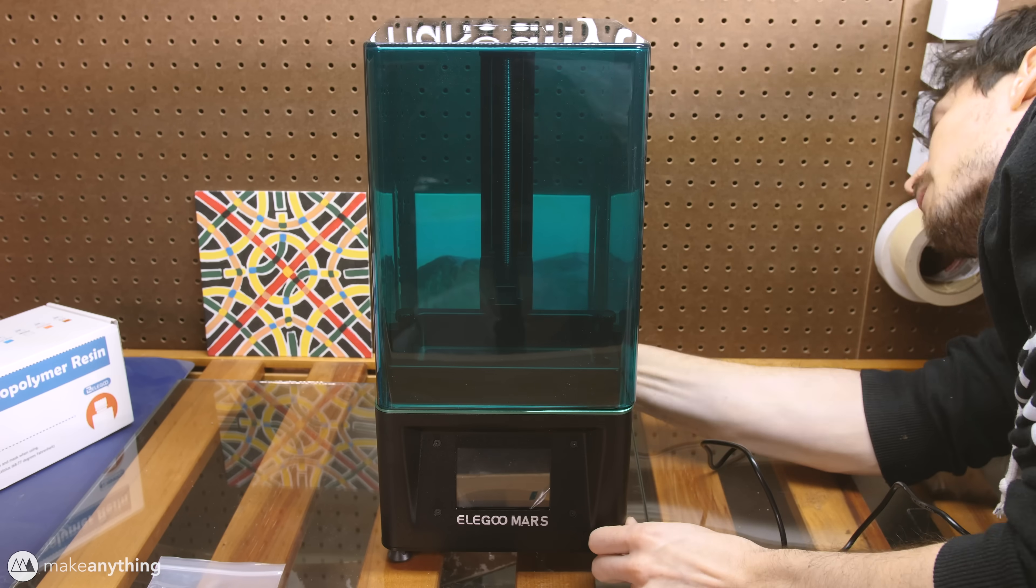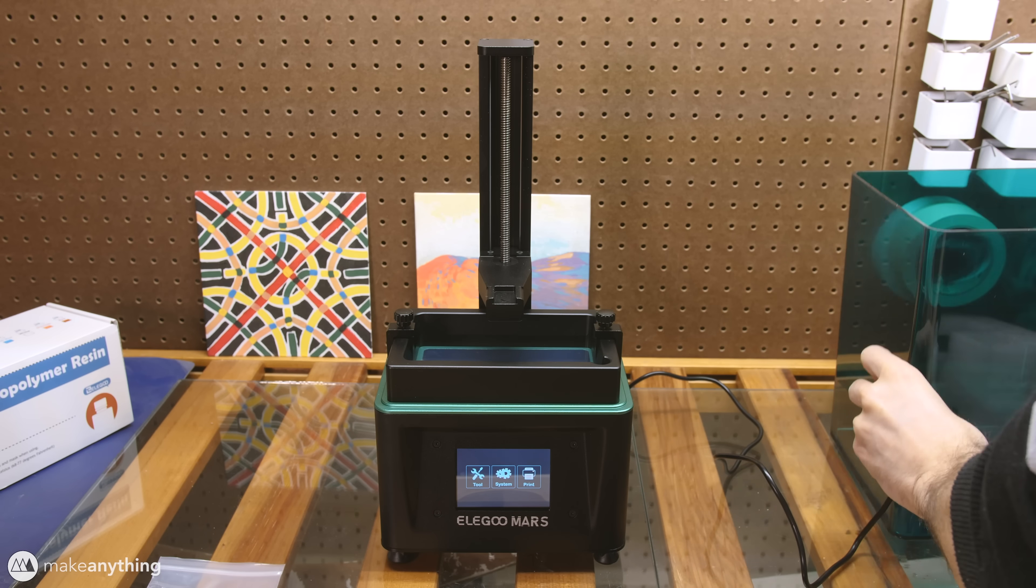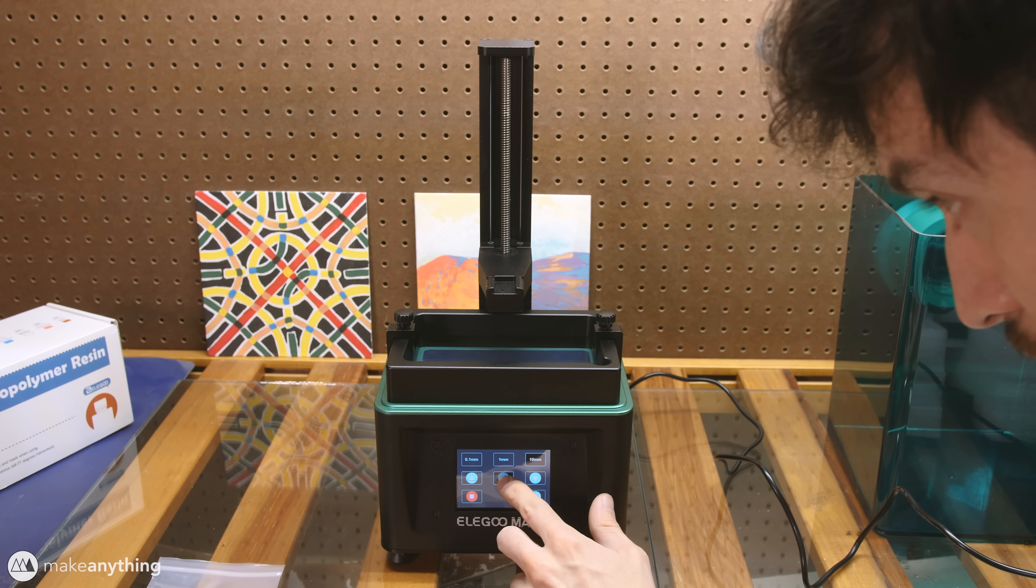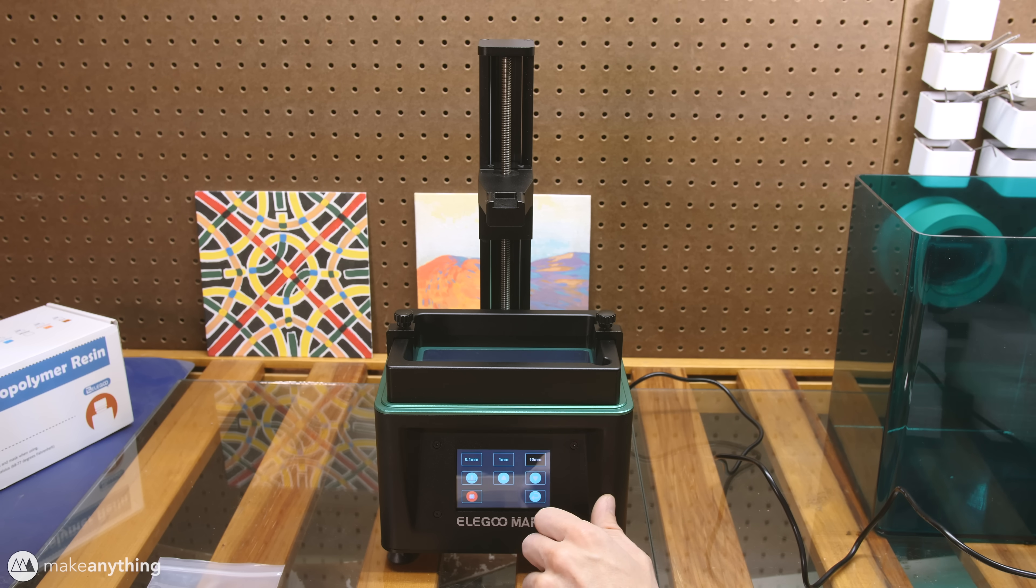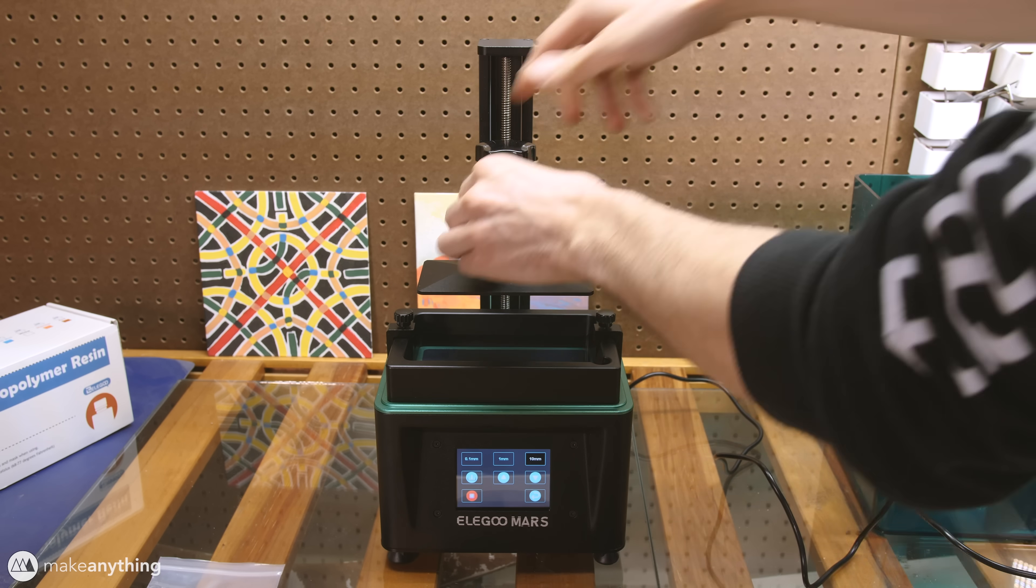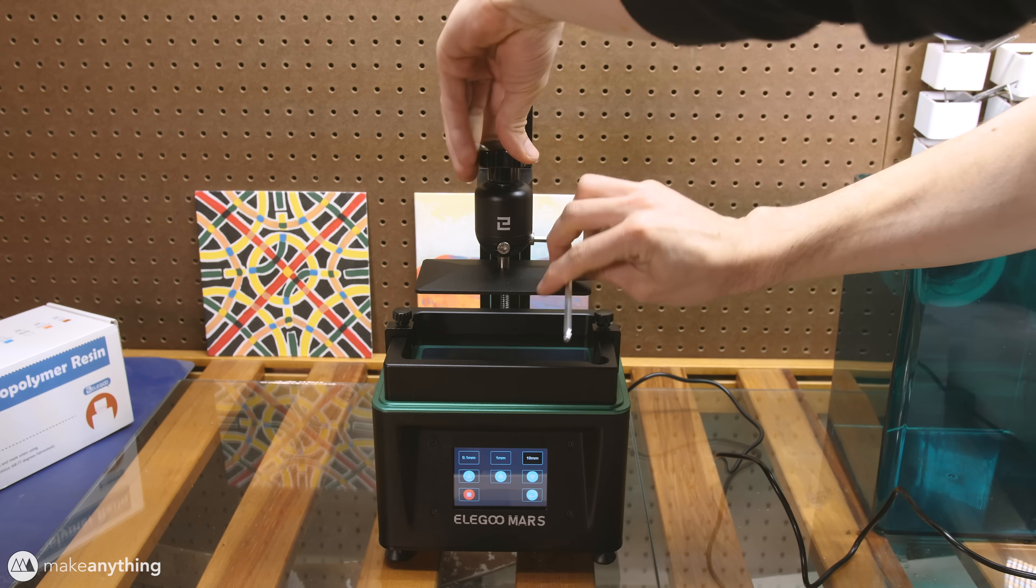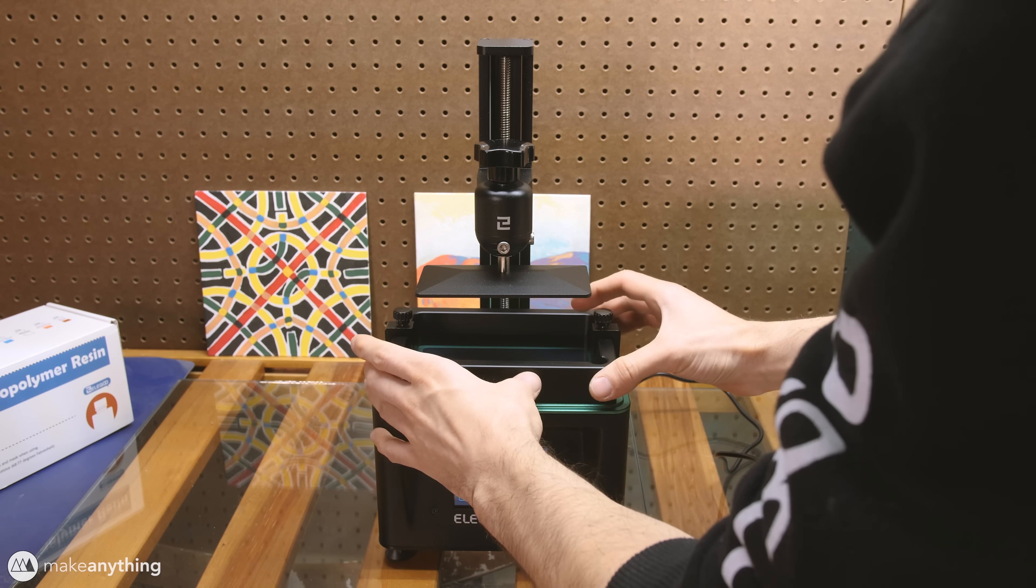We can go ahead and power up the machine, lift up the Z axis, and attach the build plate which lifts up from the bottom. We'll screw that into place and then unscrew these two screws here which allow us to level the bed. It's a pretty simple process.